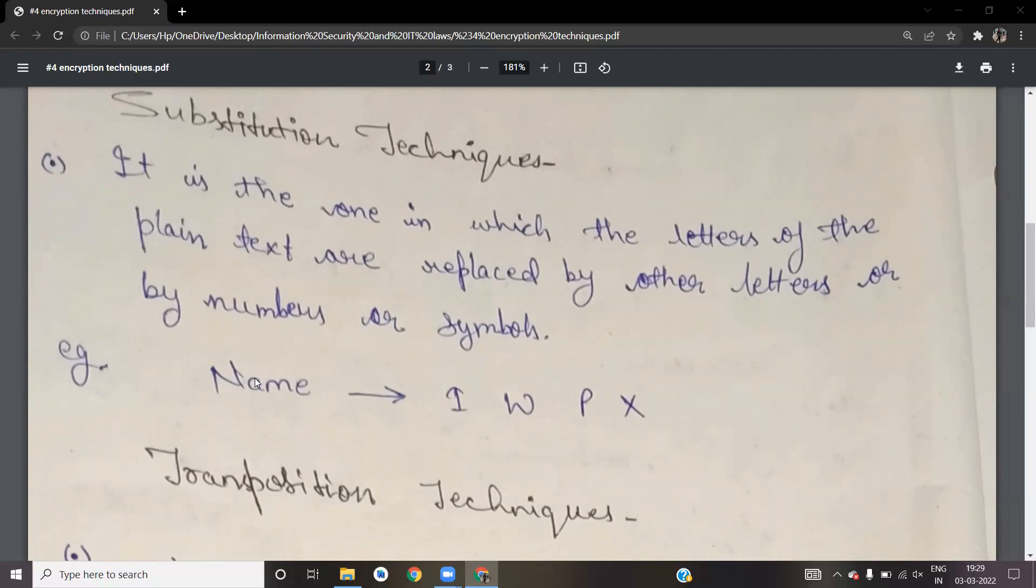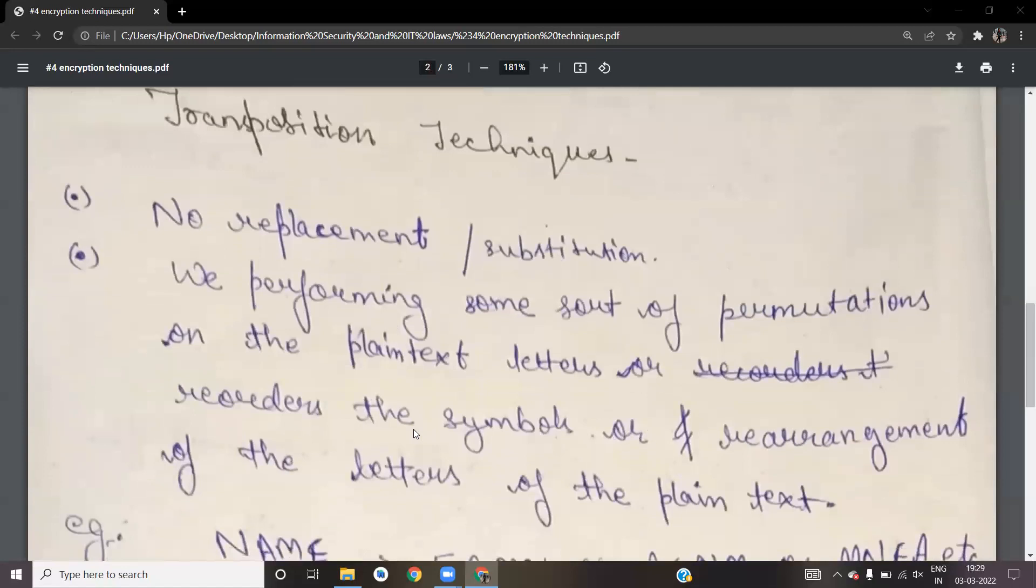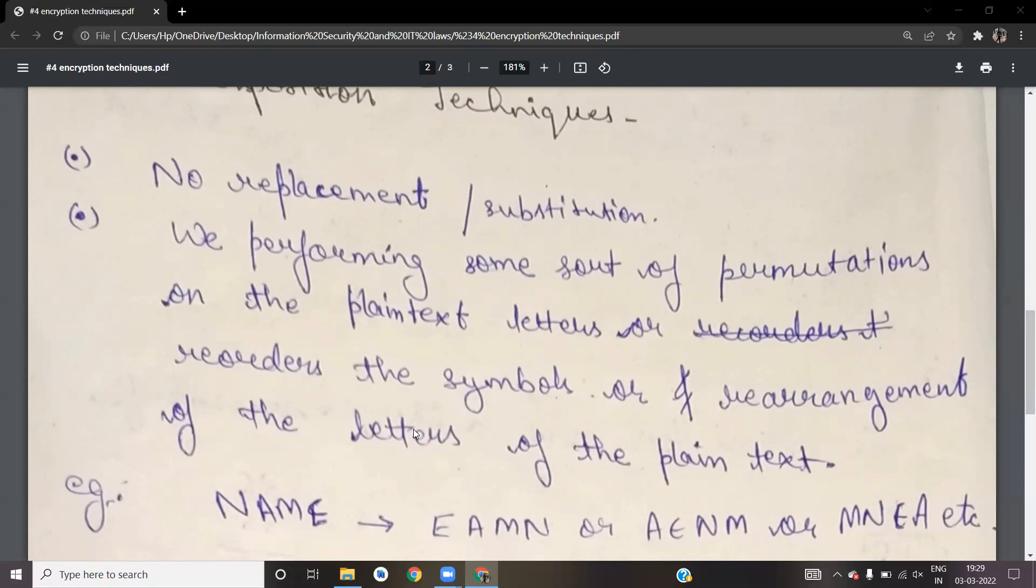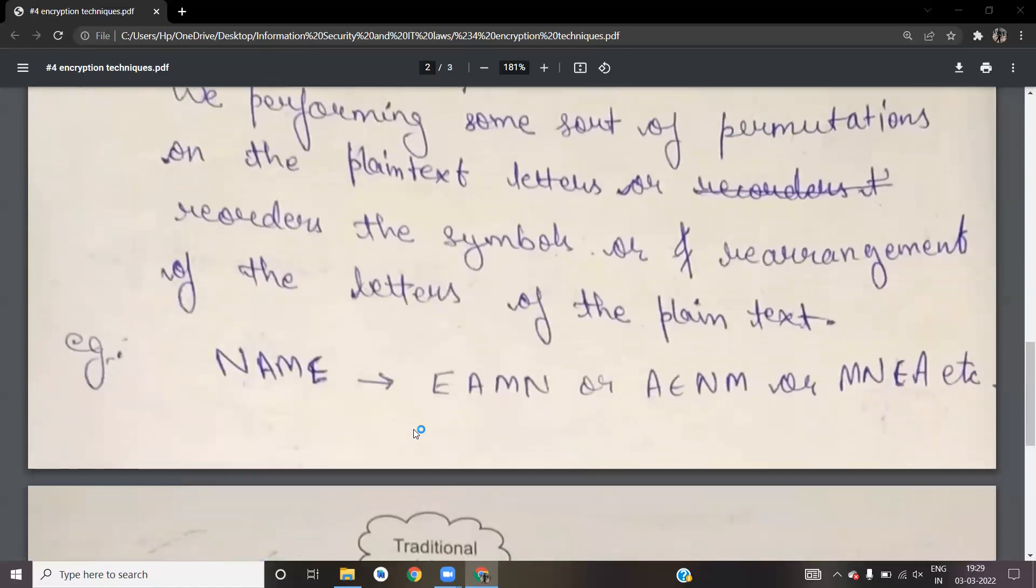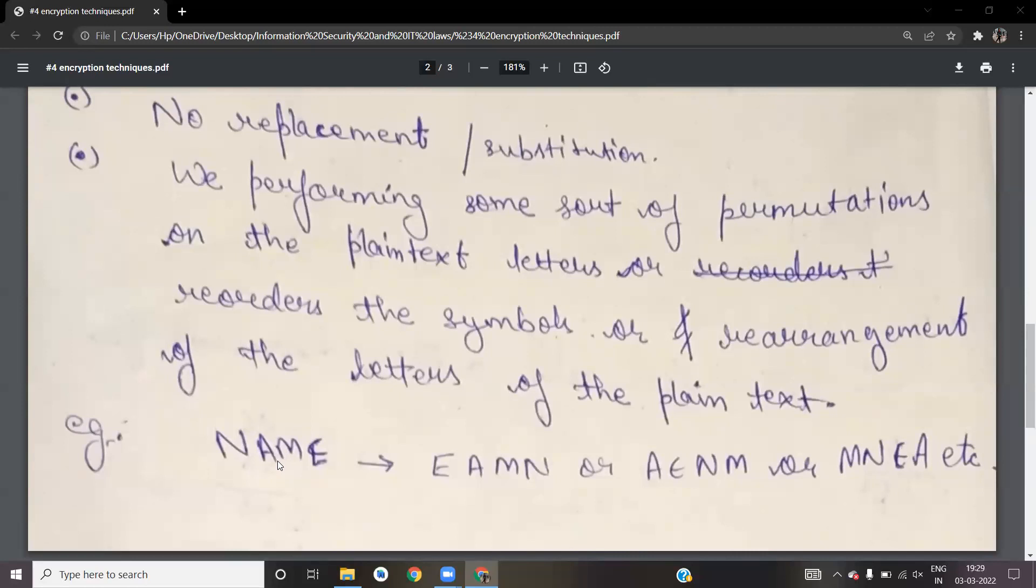But the transposition technique has no replacement or substitution. If we have a permutation, we calculate the factorial. How much will it be? 4 times 3 times 2 times 1 equals 24. We can have 24 permutations for this.